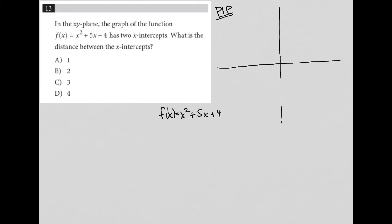I'm told it has two x-intercepts. How do I find an x-intercept? An x-intercept is when y equals 0. Y, of course, is the same thing as f(x). So I'm going to replace f(x) with 0: 0 = x² + 5x + 4.